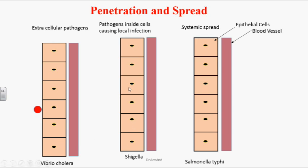In the middle picture, we look at pathogens that enter into cells and cause localized infections. The best example is Shigella, which causes dysentery in humans. The Shigella organism enters the GI tract, enters the epithelial cell, stays inside, replicates, and destroys neighboring cells — only the epithelial cells. It never enters the bloodstream, so it doesn't disseminate, and symptoms are seen only in the GI tract.